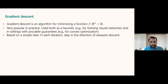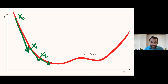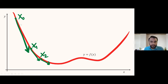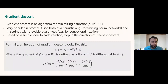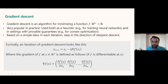I drew a picture to demonstrate this. It's a one-dimensional function where the x-axis is the input and the y-axis is the function value. Maybe you start at x0, observe that downhill is a certain direction, take a step to reach x1, then re-evaluate. Formally, an iteration of gradient descent starts at xi — your current position — evaluates the gradient at xi, and walks in the direction of minus the gradient, because the gradient tells you the direction of steepest ascent, so you want to go in the opposite direction. Eta is the length of the step.